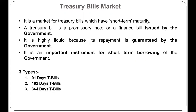The treasury bill market has short-term maturity and involves promissory notes or finance bills issued by the government. It is highly liquid because payment is guaranteed by the government, so you are never at a loss — the authority will always receive the amount since the government provides full guarantee. T-bills are an important instrument for short-term government borrowing and come in three types: 91-day, 182-day, and 364-day T-bills, representing the maturity period within which you must retire your amount.